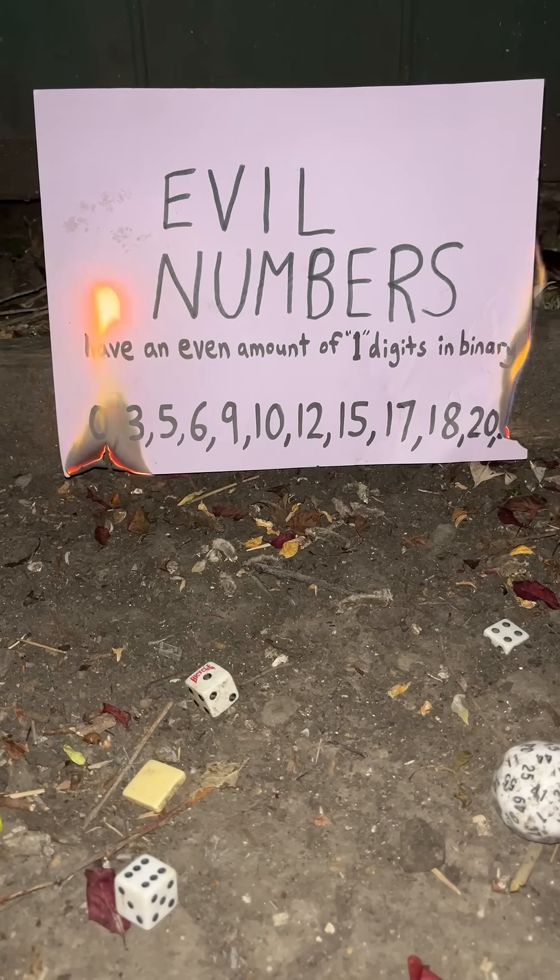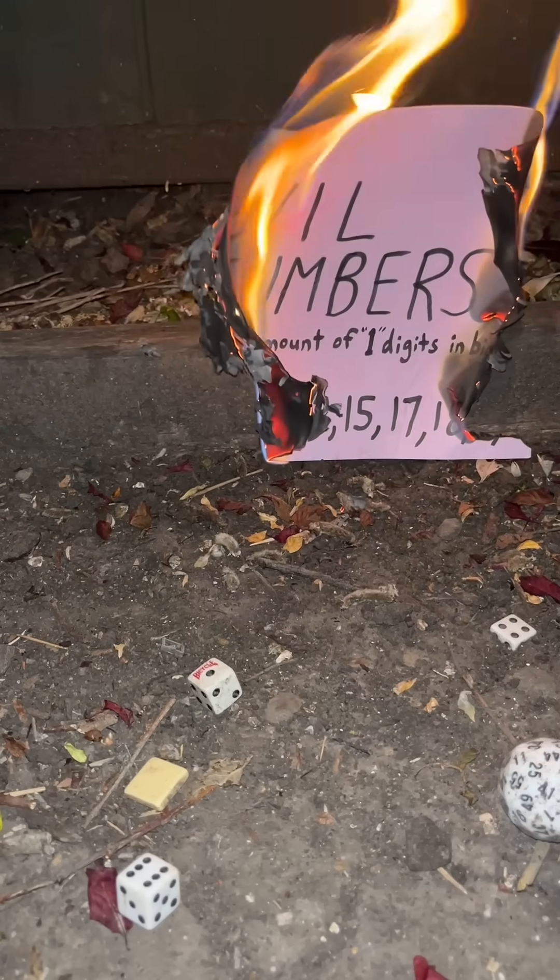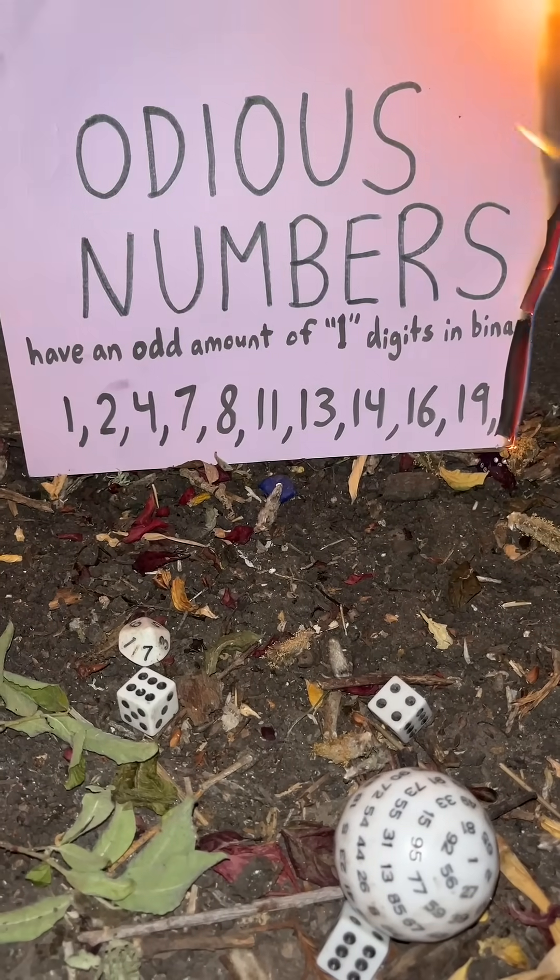Evil numbers are numbers that when written in base 2, also known as binary, have an even amount of the digit 1, whereas odious numbers have an odd amount of the digit 1.